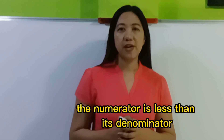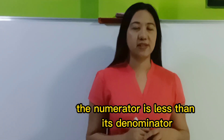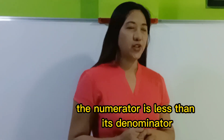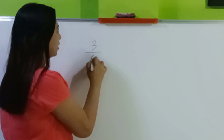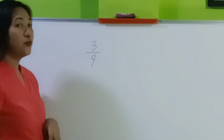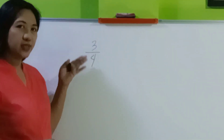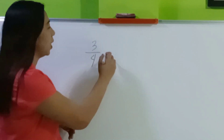Now let's start with multiplying proper fractions. What is a proper fraction? A proper fraction has a numerator which is less than its denominator. For example, three-fourths — three is less than four, so this is an example of a proper fraction.